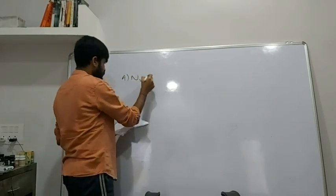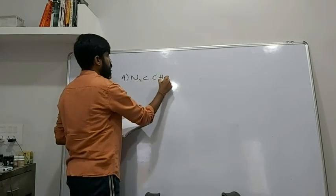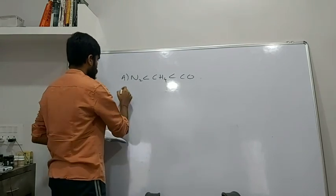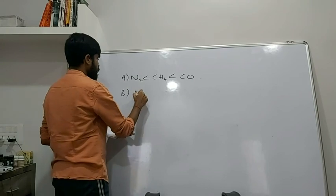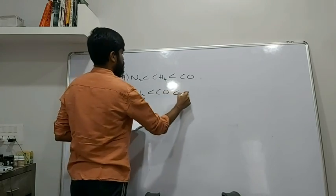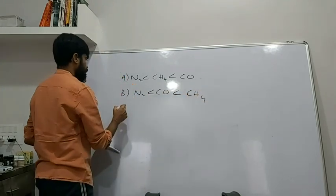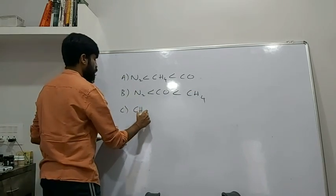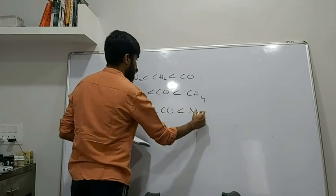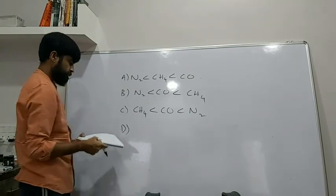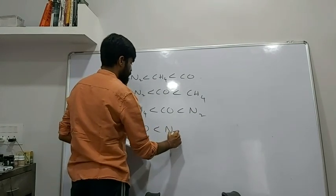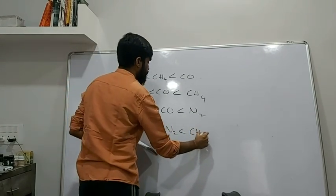Option A: N₂ < CH₄ < CO. Option B: N₂ < CO < CH₄. Option C: CH₄ < CO < N₂. Option D: CO < N₂ < CH₄.